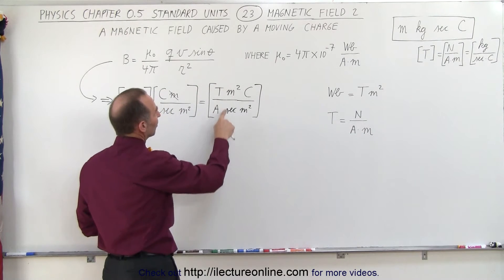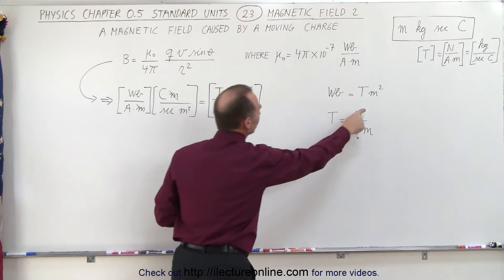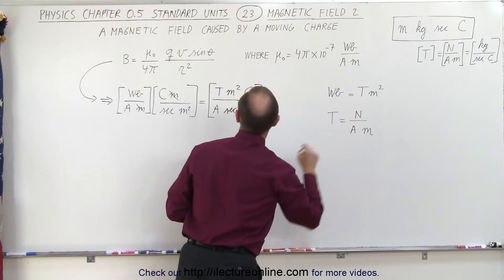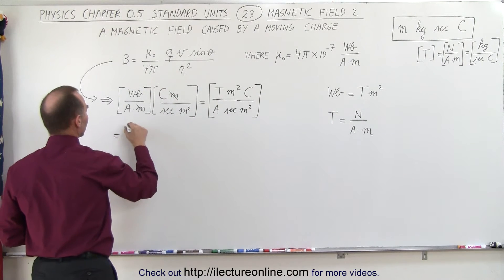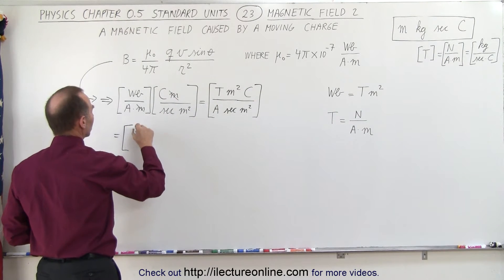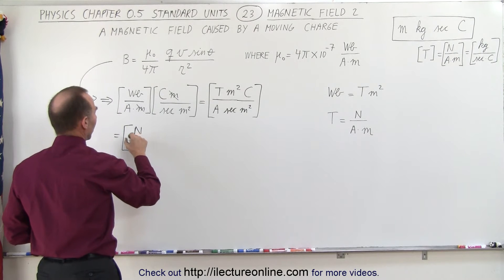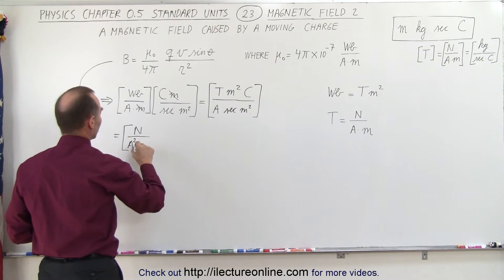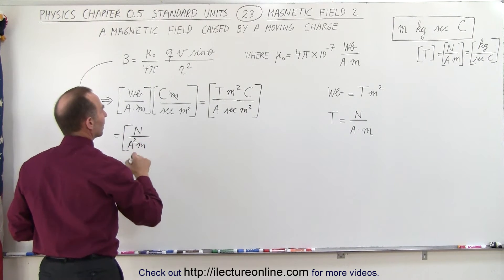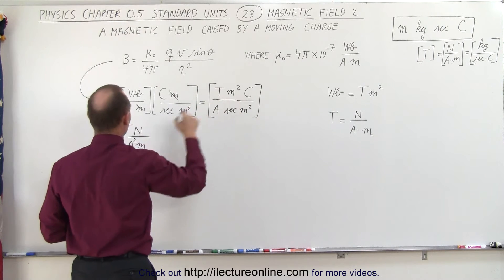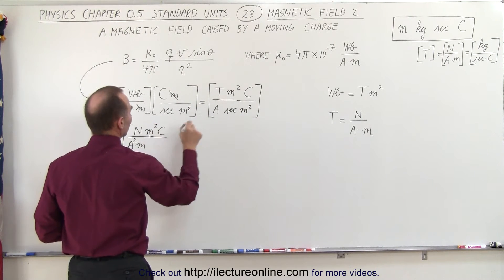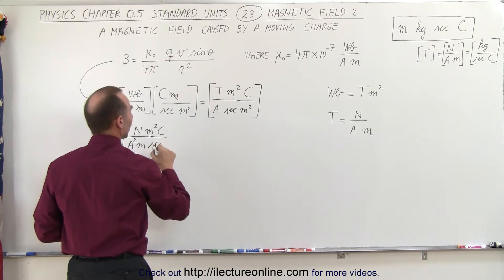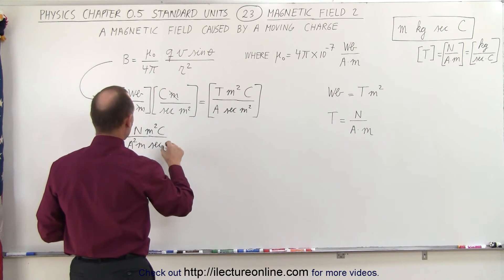Next, I'm going to replace Tesla by newtons per amp times meters. So this can be written as, instead of Teslas, newtons per amp — so now we have amps squared per meter. We still have meters squared in the numerator, coulombs, seconds, and meters squared in the denominator.